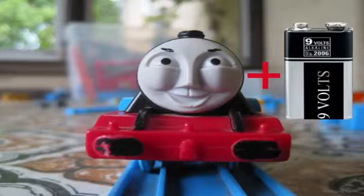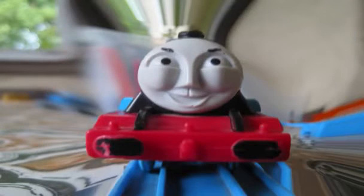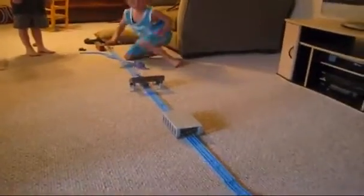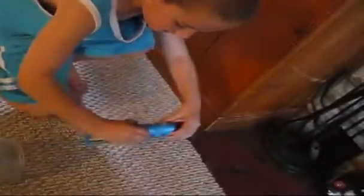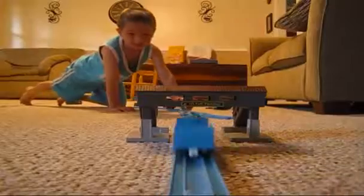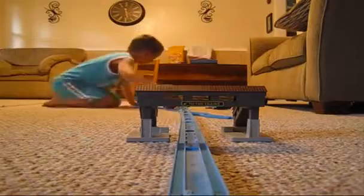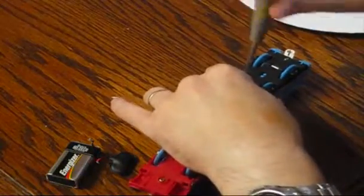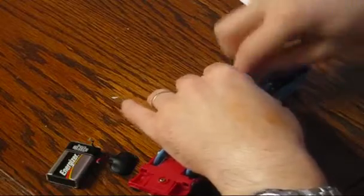Gordon plus the 9 volt battery equals a really fast Gordon. Now that we've got Gordon upside down, we're going to need to remove two screws that were holding the battery compartment.